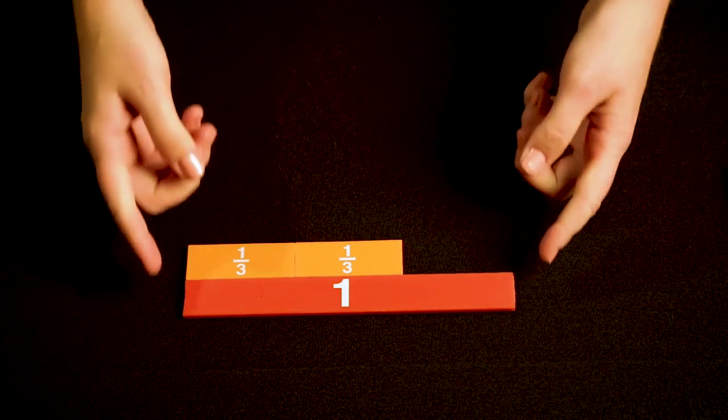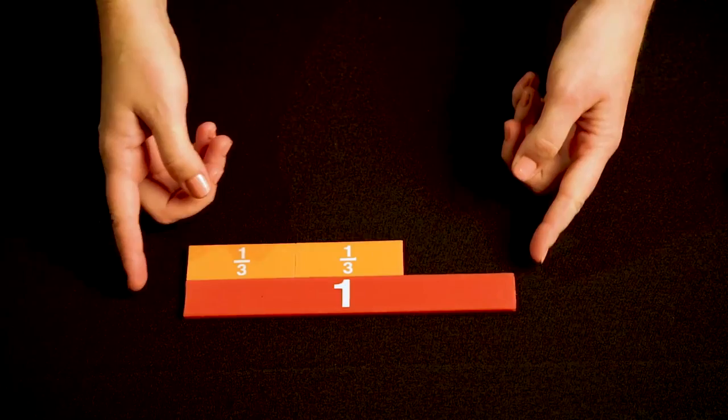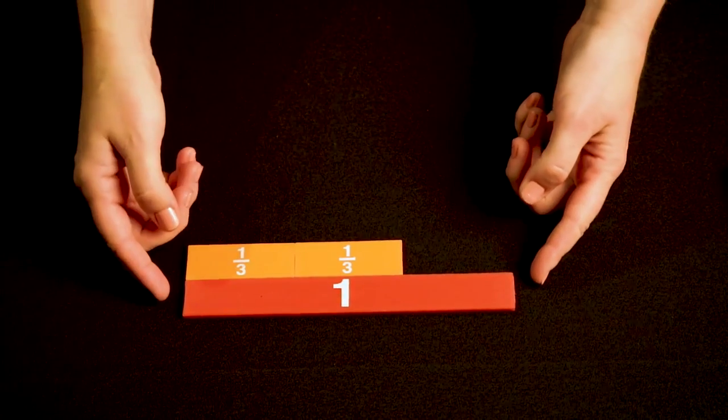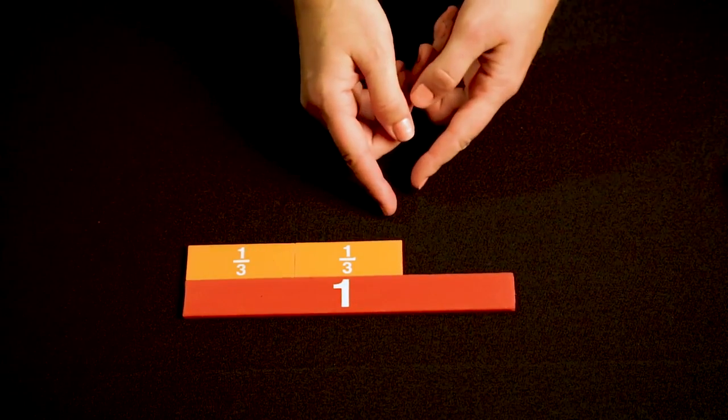When we show fractions it's important to help students see the three different models of fractions. First we start with the length model where fractions are shown according to length. Here I have the whole and I'm showing the fraction two-thirds.